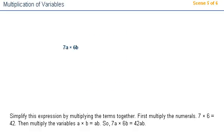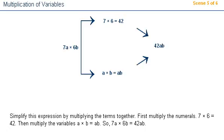Simplify this expression by multiplying the terms together. First, multiply the numerals. 7 multiplied by 6 equals 42. Then multiply the variables a times b equals ab. So, 7a times 6b equals 42ab.